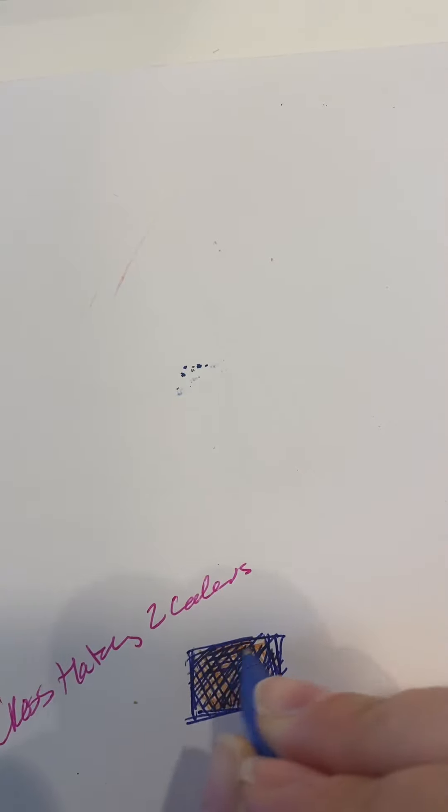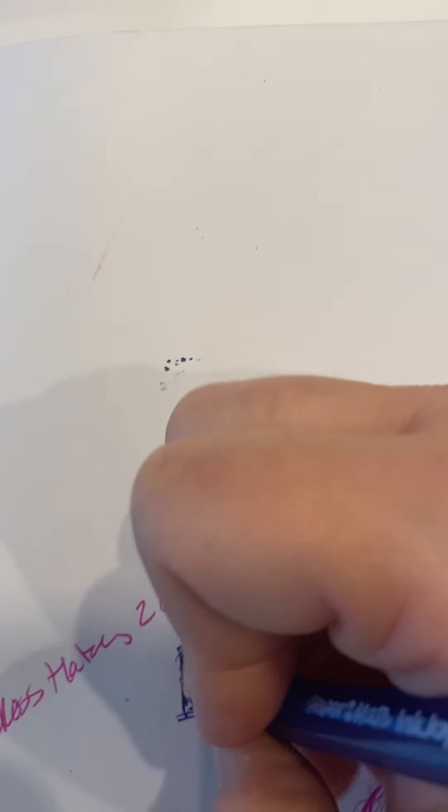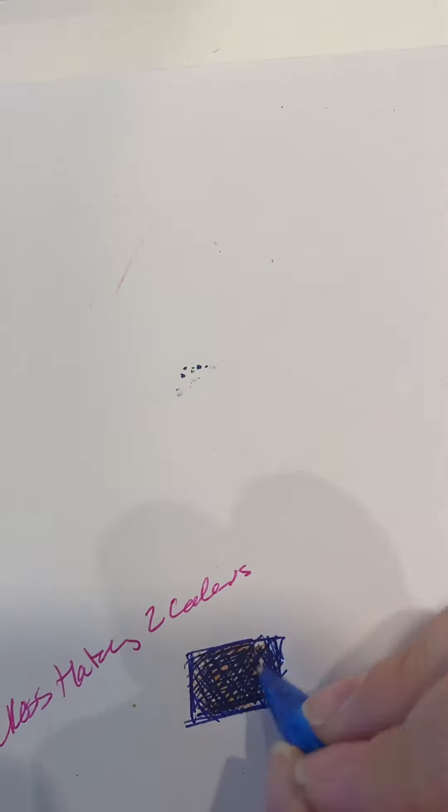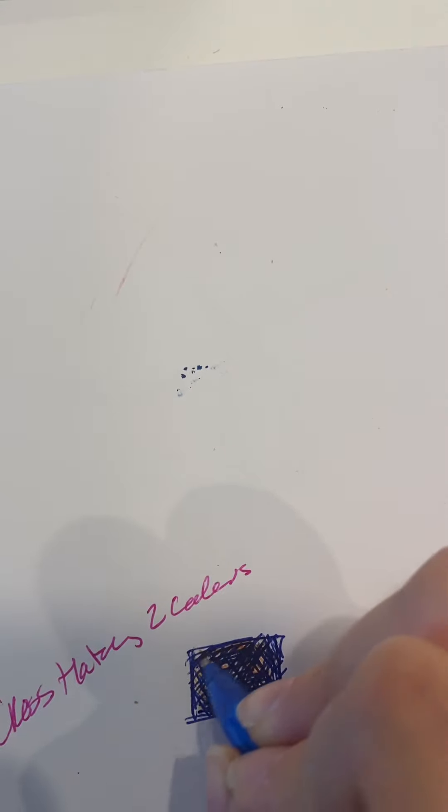So it kind of becomes like an interesting color combination, right? And the more I layer it, right, the more the color changes. And the more it starts looking like a black, the more I like, if I make this totally solid, I could probably make it look black.